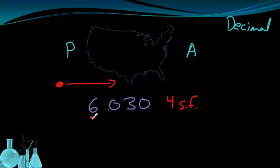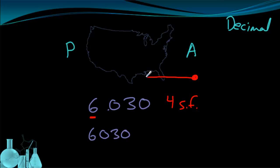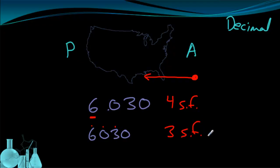Now if we take that same arrangement of digits — 6030 — but the decimal is absent, we start from the Atlantic side, the right, and count from right to left. Again, look for the first non-zero digit. Starting from the right, the first digit is a zero, which doesn't count. So we move to the 3. Now we start counting: one, two, three. This has three significant figures.